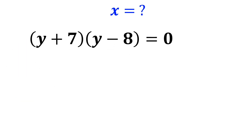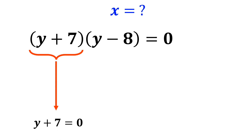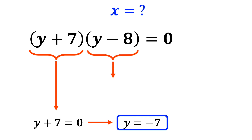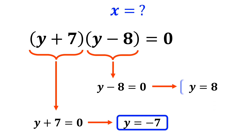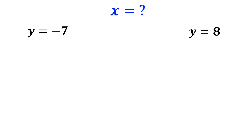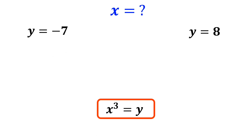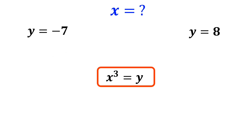We have two expressions that must equal 0. First, we set y plus 7 equal to 0, which gives y equals negative 7. Then we set y minus 8 equal to 0, which gives y equals 8. Now, according to our assumption, x cubed is equal to y.